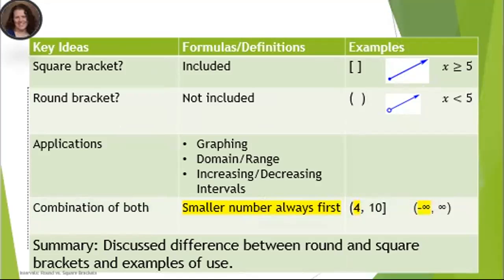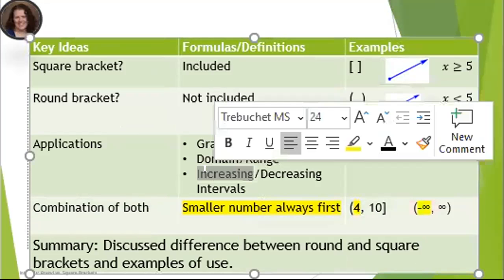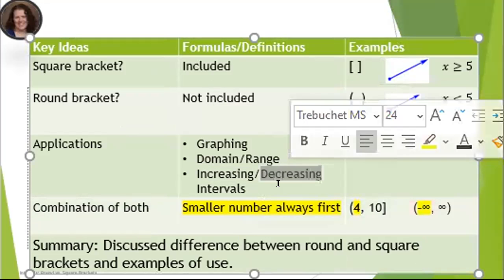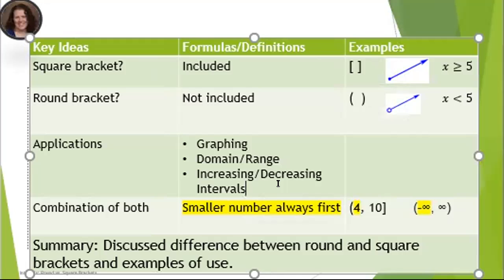So hopefully by the end of this video you've got a better feel for the difference between round and square brackets and when you would use each, specifically with graphing. You would use them in domain and range, with increasing and decreasing intervals as well. We can talk about the specifics of each of those situations in another video. Let me know what you need. Thank you.